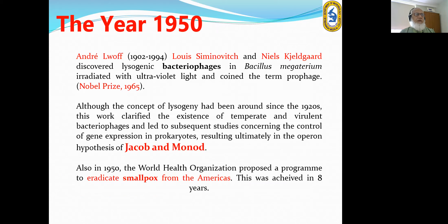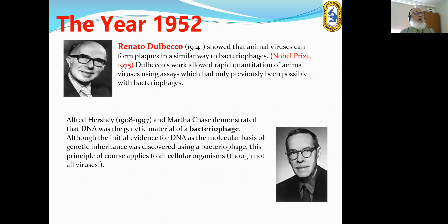In 1950, the World Health Organization proposed a program to eradicate smallpox from the Americas, which was achieved in eight years. In 1952, Renato Dulbecco showed that animal viruses can form plaques in a similar way to bacteriophages, receiving the Nobel Prize in 1975. Dulbecco's work allowed the precise quantification of animal viruses.